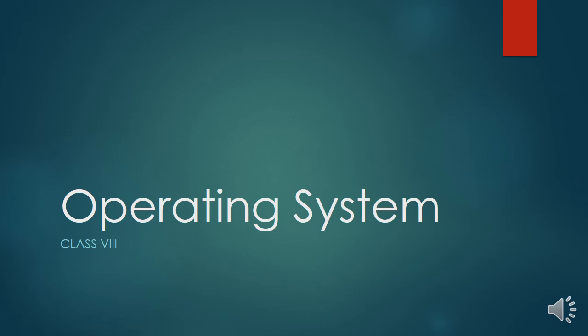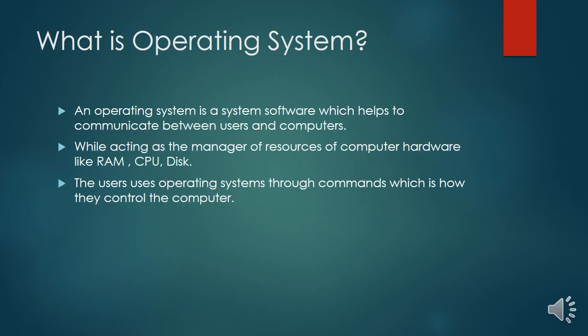In this lecture we will talk about the operating system. An operating system is a system software. System software is the most basic component of a computer system which controls the user input and output — the I/O part — copying files, printing files, and so on and so forth.